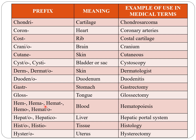Heme, hema, hemo, and hemato — all these terms indicate blood. Hepato or hepatico indicates liver, for example hepatic portal system. Histo indicates tissue. Hystero indicates uterus, as in hysterectomy.